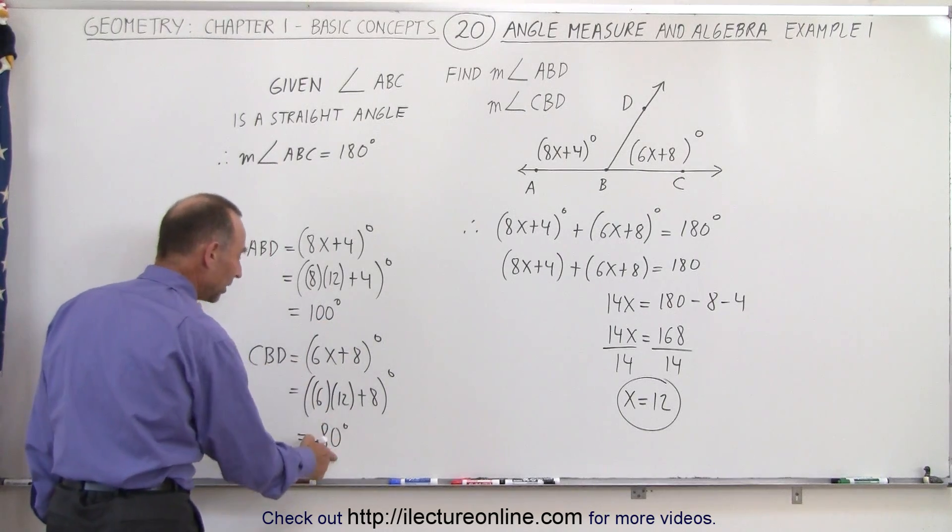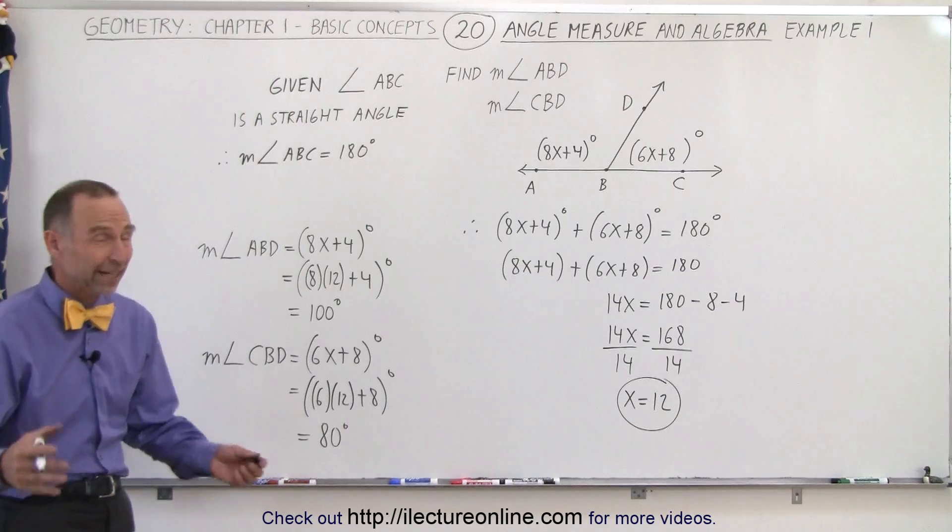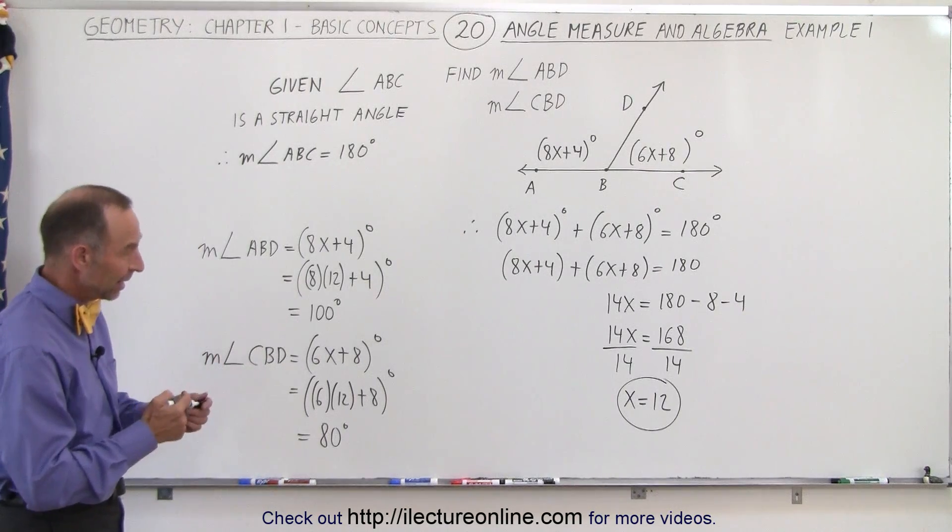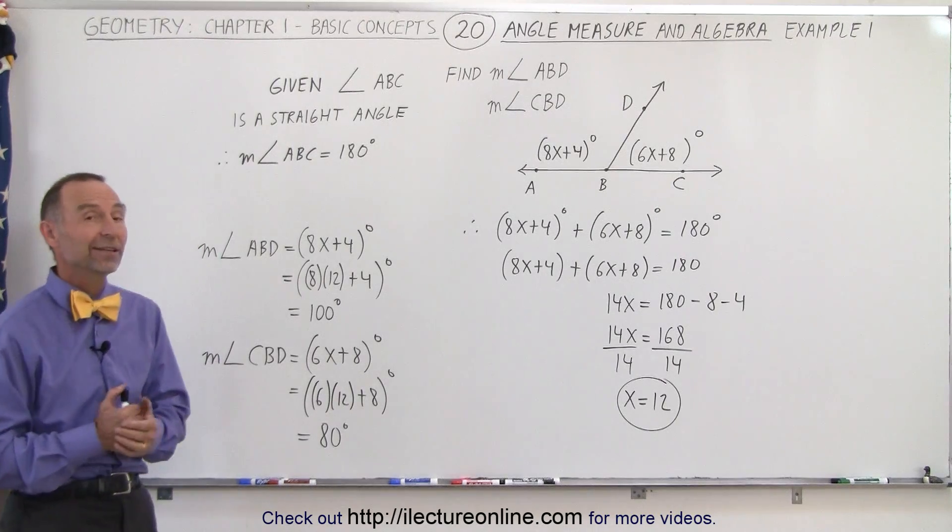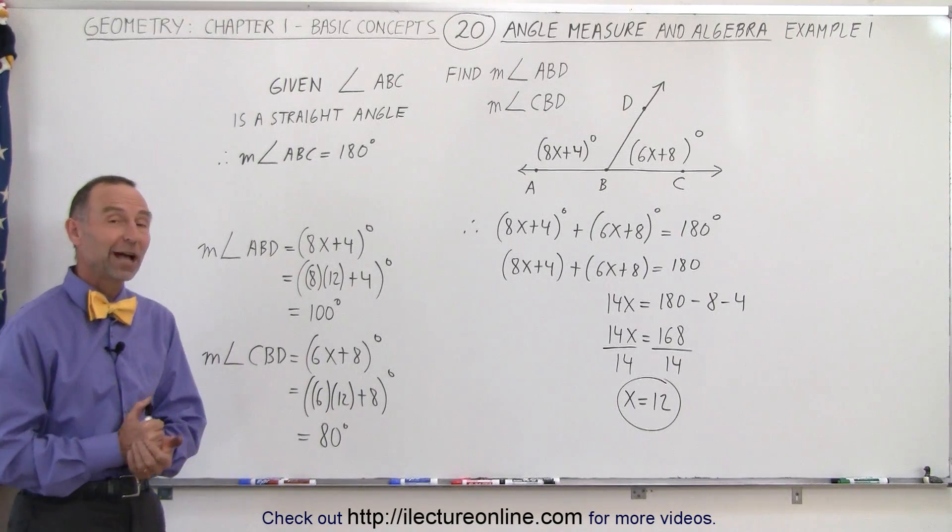And 100 degrees added to 80 degrees does indeed add up to 180 degrees. Which means that the angle ABC does indeed have a measure of 180 degrees. Which means it is indeed a straight angle. And that's how it's done.